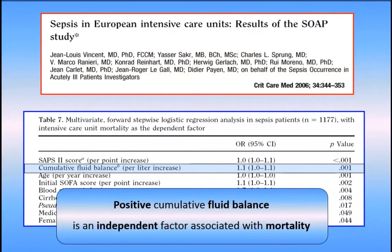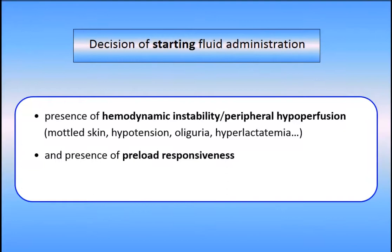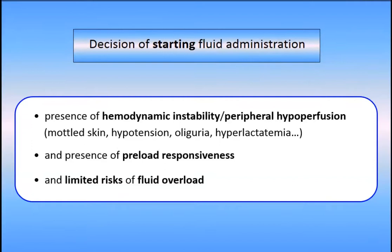Therefore, the decision to start fluid administration should be based on three elements. First, the presence of hemodynamic instability or peripheral hypoperfusion — mottled skin, hypotension, oliguria, hyperlactatemia. Second, the presence of preload responsiveness, to avoid giving fluid to patients who are fluid unresponsive. And third, limited risk of fluid overload. These three elements are mandatory before deciding to give fluid to patients.